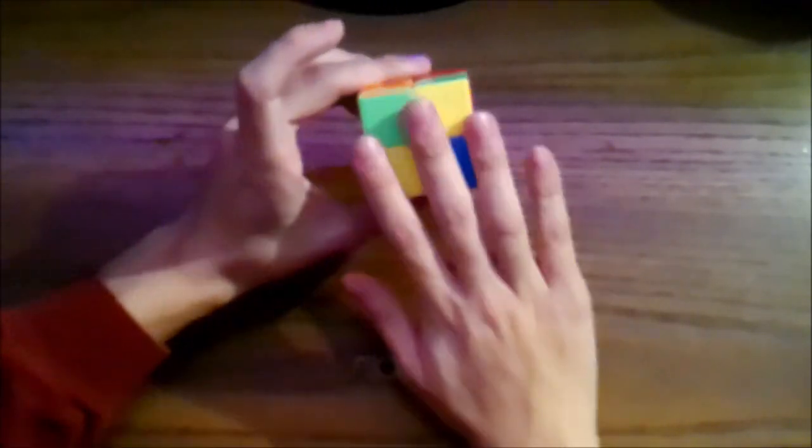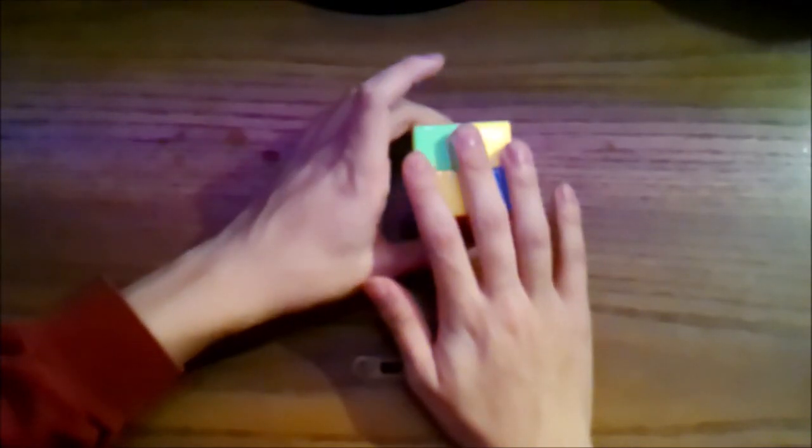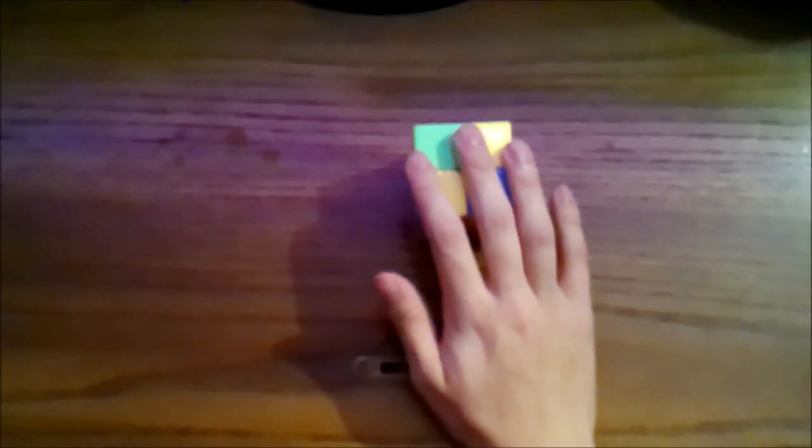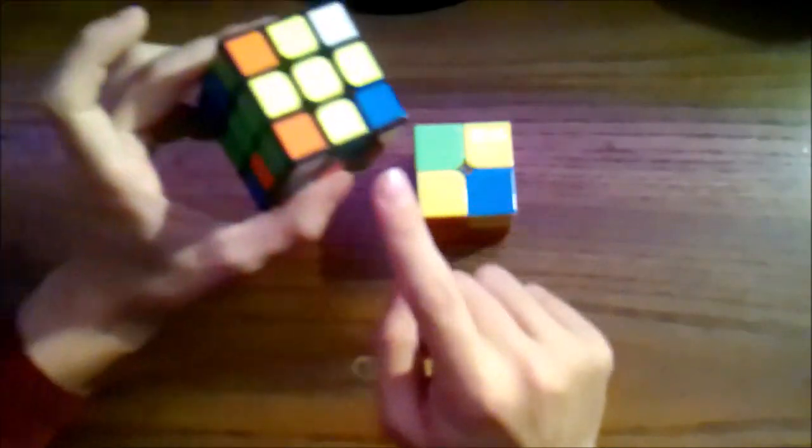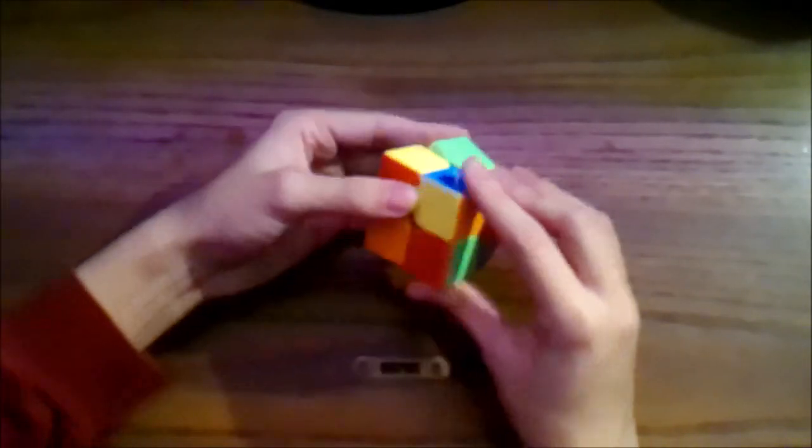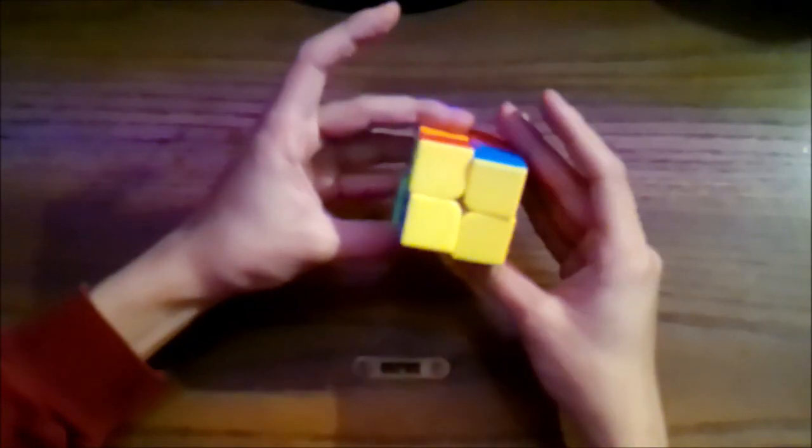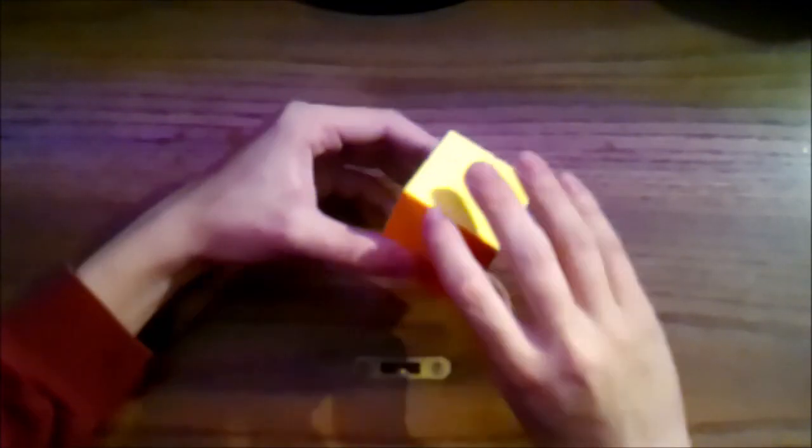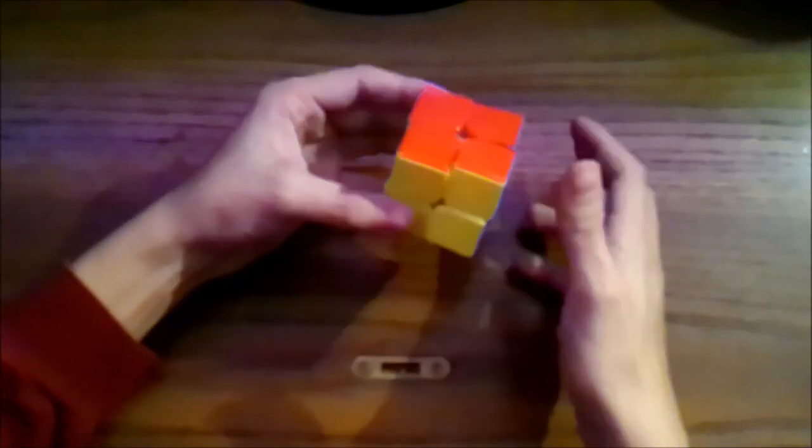The next step is to solve the yellow side of the cube. To do this, you'll want to follow the same process that you used to solve the white side. First, create a yellow cross on the yellow side, and then move the yellow corners into their correct positions. Now that you've solved the yellow side, you should have a fully solved 2x2 Rubik's Cube.